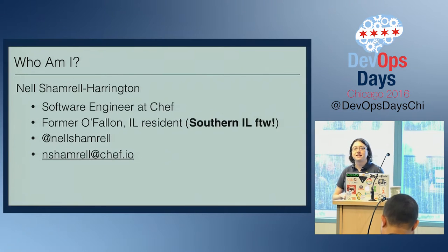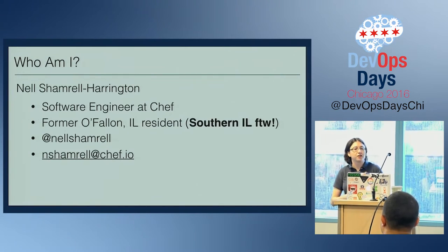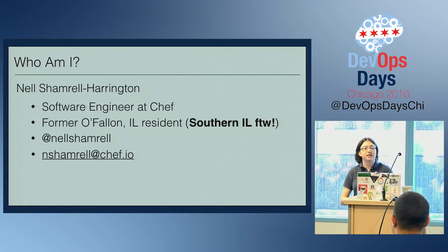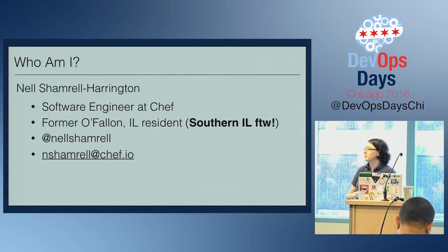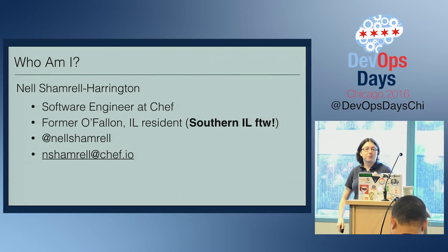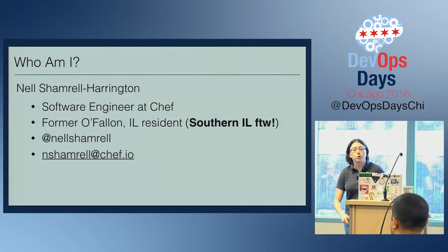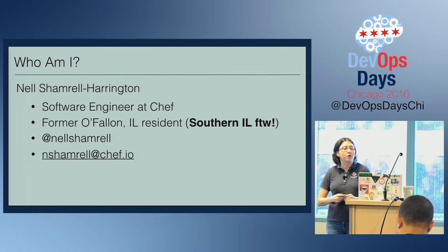I'm Nell Chambrell Harrington, and I'm a software engineer at Chef. Although I currently live in Seattle, like Jill, I also used to live in Southern Illinois, in O'Fallon, Illinois, just across the border from St. Louis. Feel free to tweet me at @nellchambrell at any time, or email me at nchambrell@chef.io.